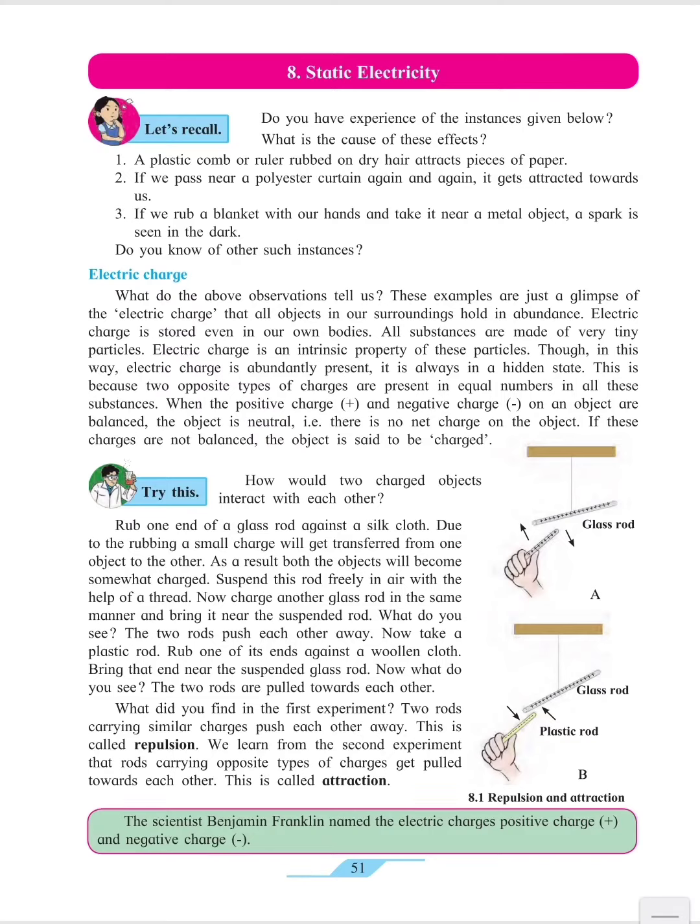We all are familiar with one small experiment. Take a comb and take some small pieces of paper. You rub the comb on your head and just take that comb closer to the pieces of paper. What do we observe? We observe that the pieces of paper get attracted towards the comb. That is static electricity.